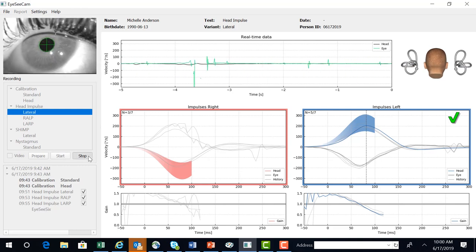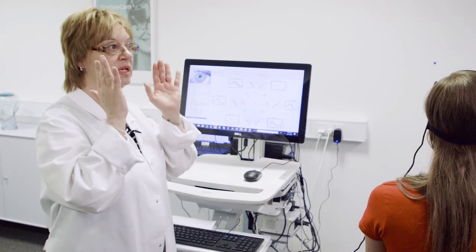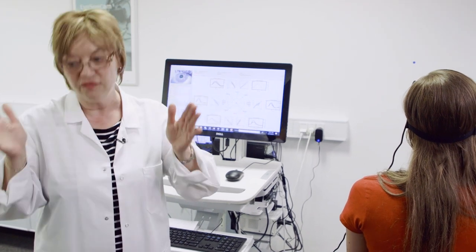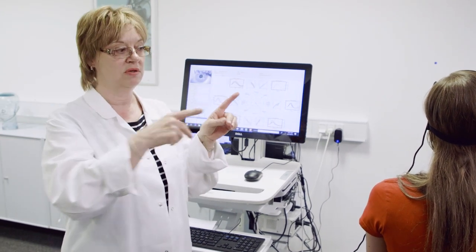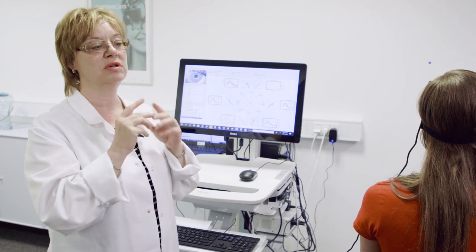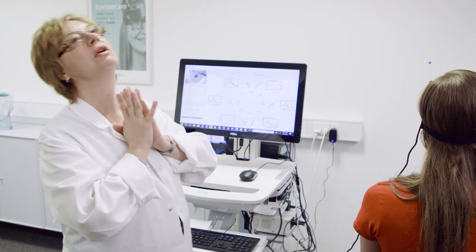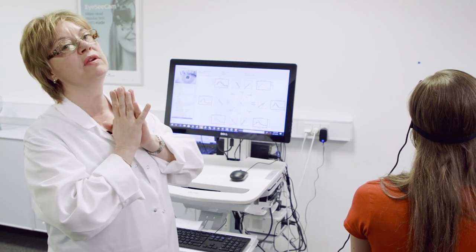For vertical canals, for testing the vertical canals it works very much the same, only for the vertical canals they'll be thrusting in a 45 degree plane. And so just for example I'll show a LARP, which is a left anterior right posterior. So I'll thrust over the left shoulder for the left anterior and come back over the right for the right posterior.